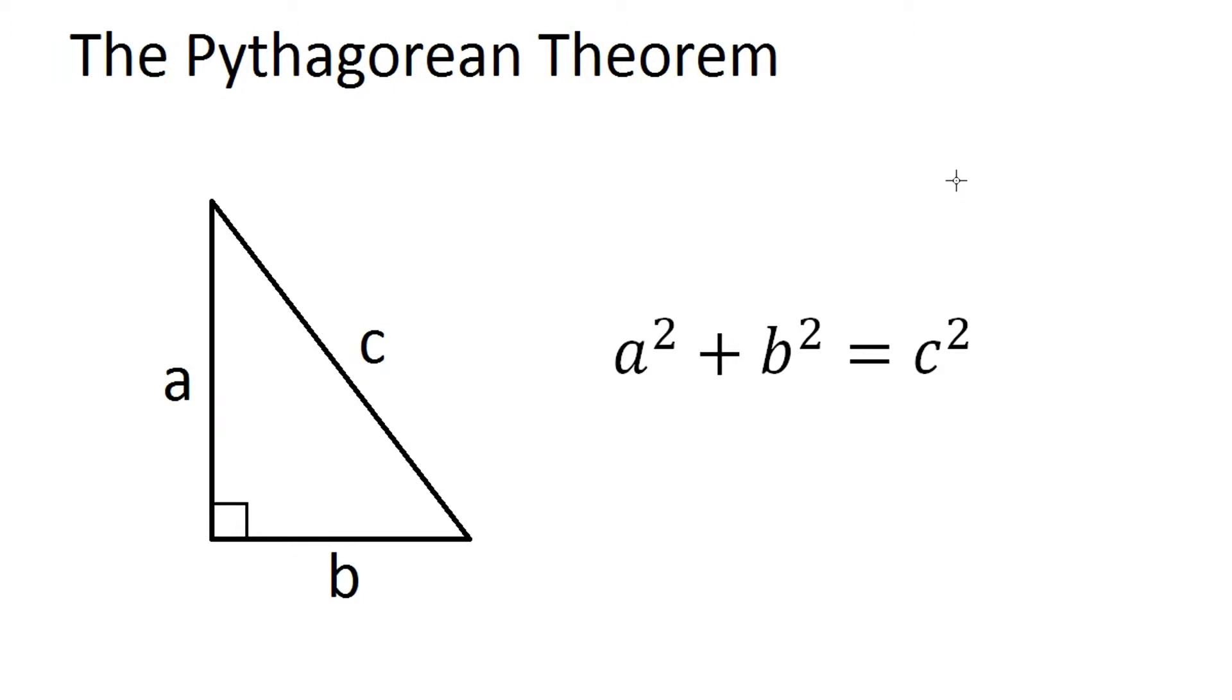Hey YouTube, in this video I'll be showing you an easy proof for the Pythagorean Theorem, which states that if you have a right triangle with the sides a, b, and c, where c is the hypotenuse, the side opposite of the right angle, then the sides are related by a squared plus b squared equals c squared.